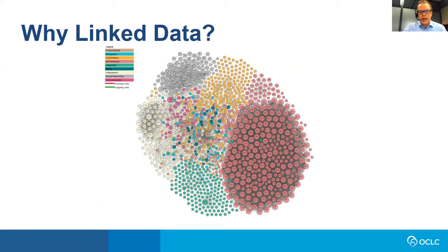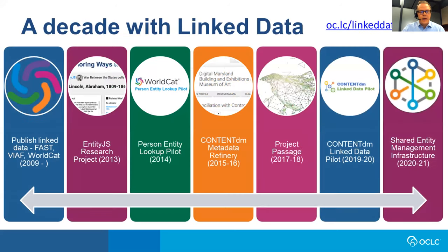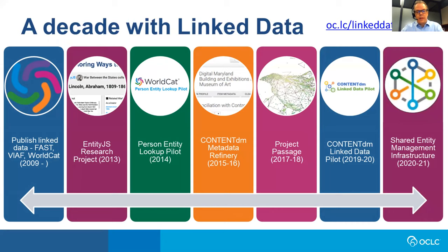One way to look at linked data is through its technical definition: a set of best practices for publishing data on the web that is interlinked with other data to allow for more useful semantic queries. Another way is through the question 'why linked data?' — because it helps connect data, connecting isolated systems and services, which allows them to better connect people to libraries and libraries to each other.